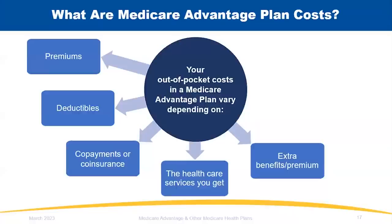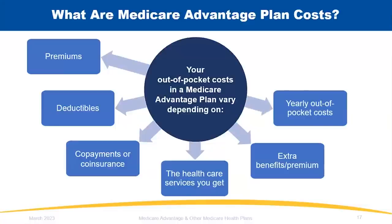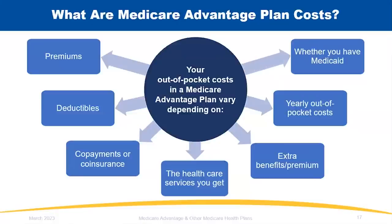Look at extra benefits and whether there's an extra cost — some plans offer meal delivery services or gym memberships in addition to dental, vision, and hearing. Check the yearly out-of-pocket cost limit; once you reach that limit, you pay nothing for Part A and Part B covered services. If you also have Medicaid, look to see if a plan coordinates both, with Medicaid as the payer of last resort.